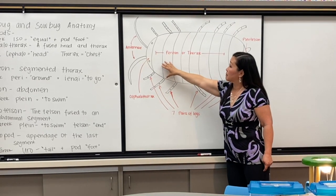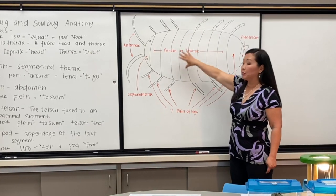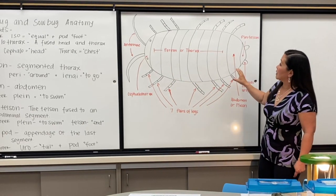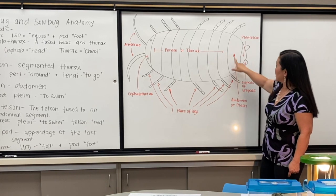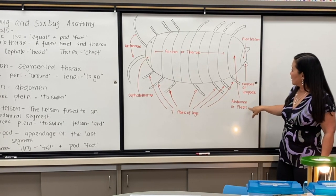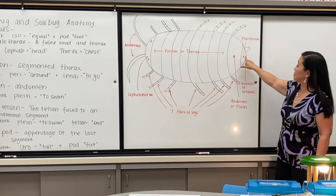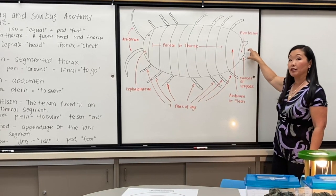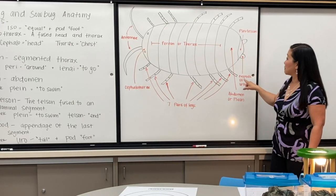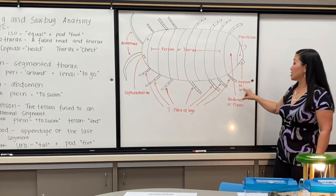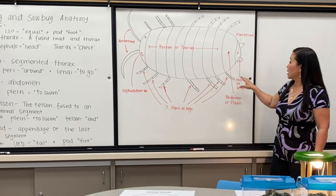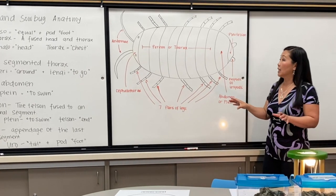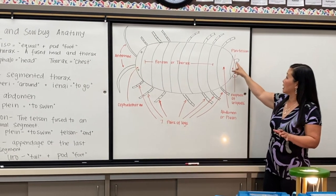This is the perion, or the thorax. Each section of the thorax is plated and segmented, and then they also have the end part which is the abdomen or pleion, and this is the pleotelson. Our crayfish also had a telson at the center of their tail fan, and the pill bugs and sow bugs also have exopods or uropods. The crayfish had uropods on the sides of the telson and the tail fan, and these just have extensions out of the end.